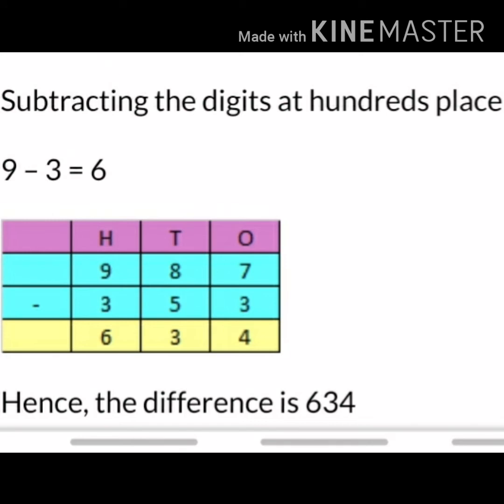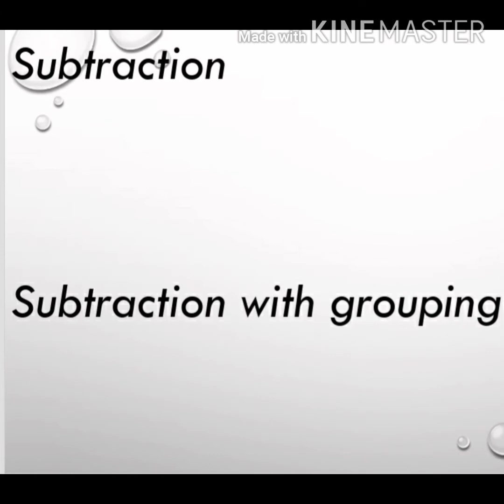Now subtracting the digit at hundreds place. What are the numbers in hundreds place? 9 and 3. We'll subtract 3 from 9 and it will give you 6. Now if we subtract 353 from 987, it will give you the difference of 634. Perfect. And students, I hope I made you understood nicely. So let's come to the other topic.